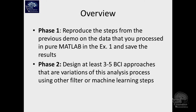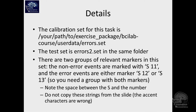Phase two is to design three to five BCI approaches that are variations of that. You should use different machine learning methods, such as logistic regression or support vector machines, and some other filters that make sense — other filters to achieve the same effect, same kind of band pass, for example — or getting rid of artifacts, things like that.